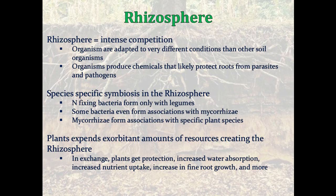Some of this symbiosis leads to nitrogen fixation, some leads to mycorrhizae interactions, and mycorrhizae form associations with specific plant species. The bacteria or fungi are often specific to those plants. Plants expend exorbitant amounts of resources creating the rhizosphere — that 50 to 80% of photosynthate products going below ground. But in exchange, that is where they get their water, their nutrients, fine root growth, and some protection from the harmful players in the soil.